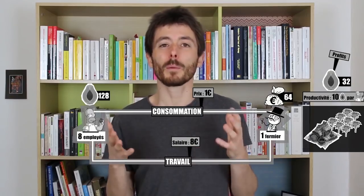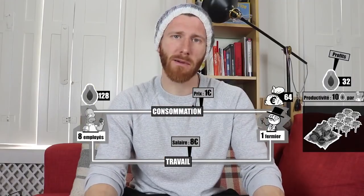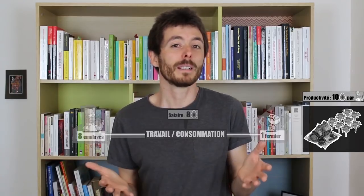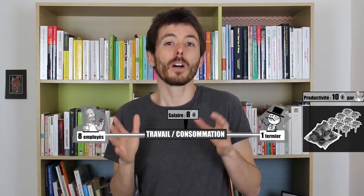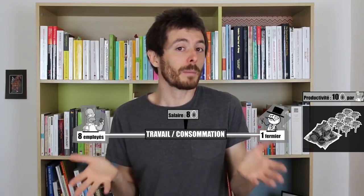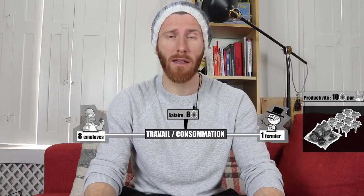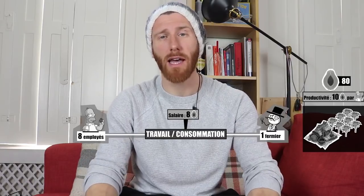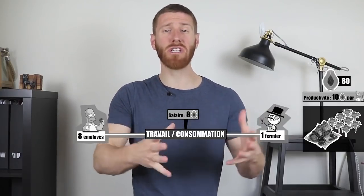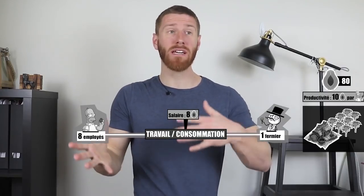Could we simplify the base model a bit? Instead of employees being paid in money, what if they were paid directly in papayas? After all, they can only buy papayas with their salary anyway, so why bother with money? But what about savings? Savings can only be used to buy papayas in the future, so we might as well save papayas directly. That means instead of the farmer paying €8 to his employees who then buy papayas, we suppose they directly receive 8 papayas as their salary. This seems simpler.